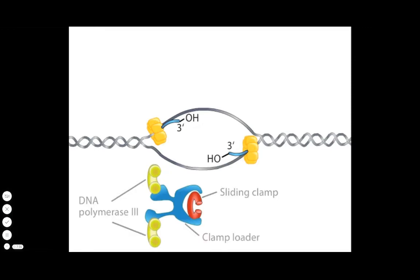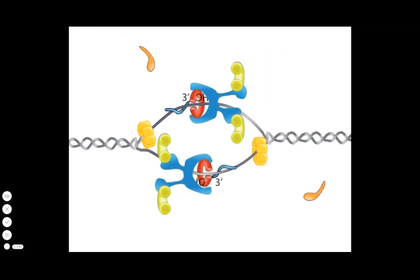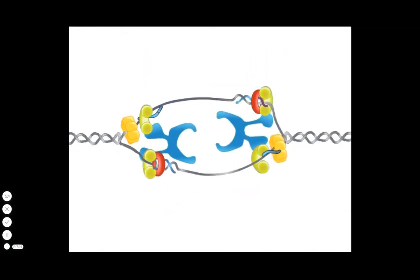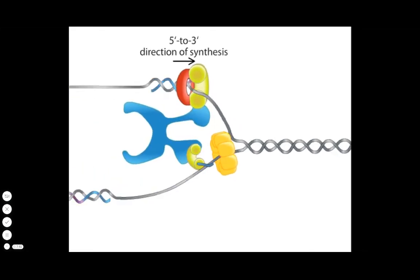The clamp loader places the sliding clamp onto the DNA. It then places an attached DNA polymerase III complex next to the sliding clamp. The sliding clamp holds the DNA polymerase in position on the 3' end of the growing strand as the polymerase synthesizes new DNA.